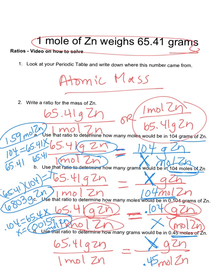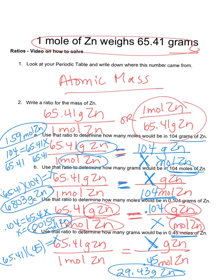Now I cross multiply. 65.41 times 0.45 equals 1 times x equals x. In the end, I get 29.43 grams of Zn. So the big idea when using ratios is be comfortable with cross multiplying and realizing the equal sign means the top and the bottom units, the top units equal each other, the bottom units equal each other.